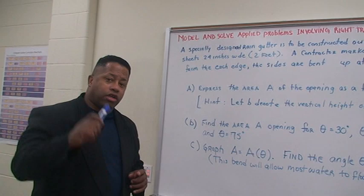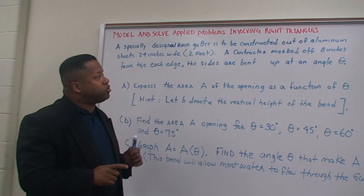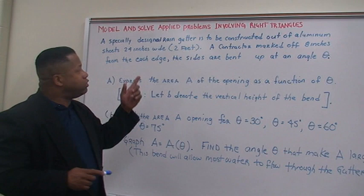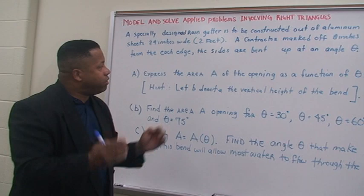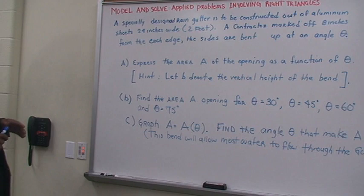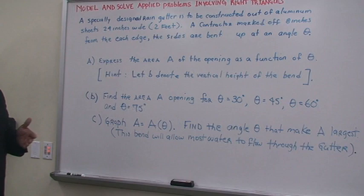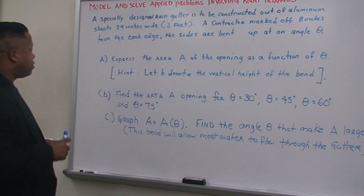So let's look at a nice problem right here. A specially designed rain gutter is to be constructed out of aluminum sheets, twenty-four inches wide, which is equal to two feet. A contractor marked off eight inches from each of the edges, and the sides are bent up at some angle theta. Now, we want to express the area A of the opening as a function of theta, and the hint is let B denote the vertical height of the bend.